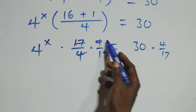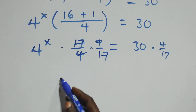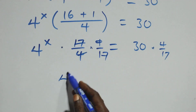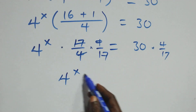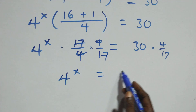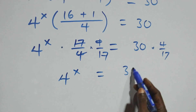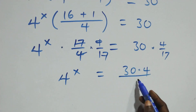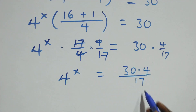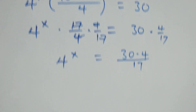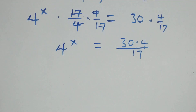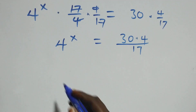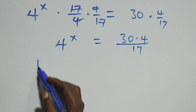The 17 and 4 cancel each other, and we are left with 4^x equals 30 times 4 over 17. From here, we take the log of both sides.